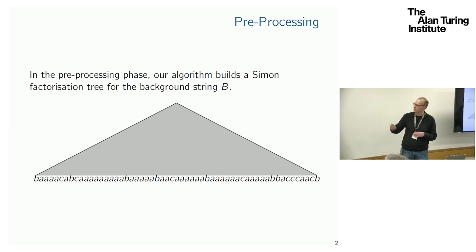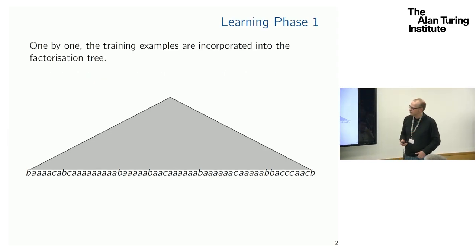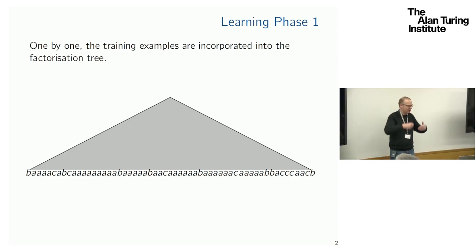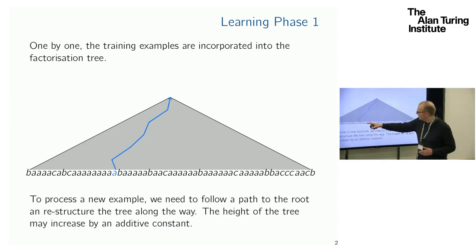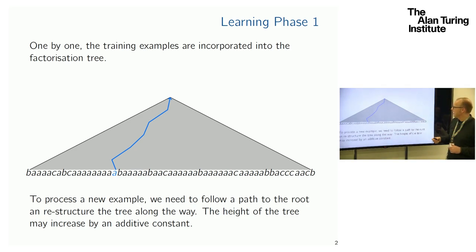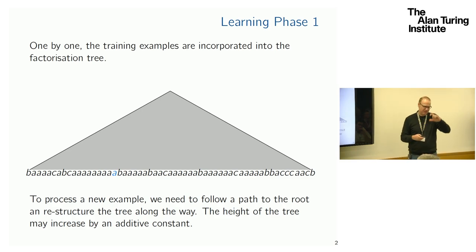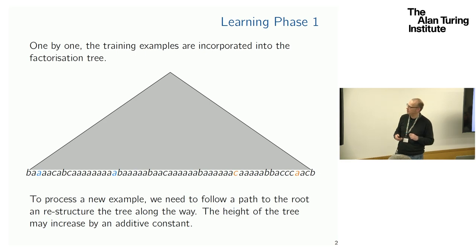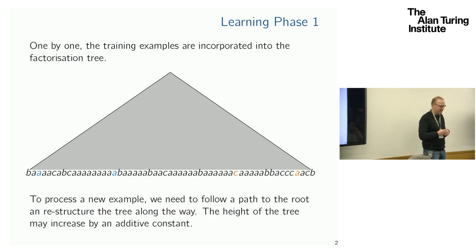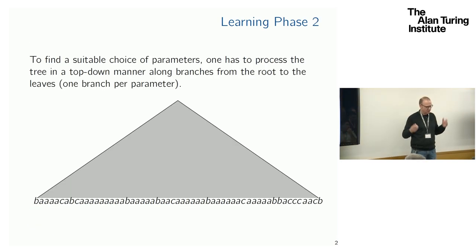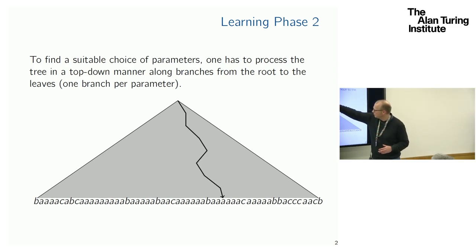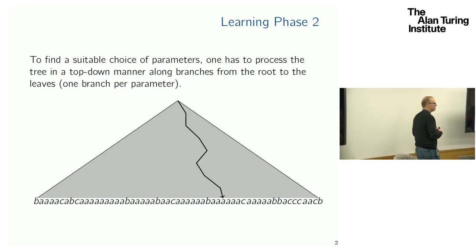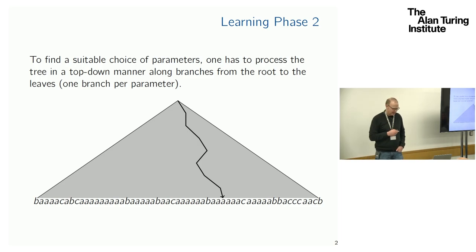The outline in three pictures: pre-processing builds a factorization tree. Then training has two phases. First, we enter training examples one by one and expand the factorization tree — we get a training example, follow a path from that node to the root (constant steps since the height is constant), restructure the tree on the way, and we're done. The tree increases only by an additive constant per example, and after all training examples the height is still polynomial in the number of training examples. Then the last phase is to actually learn the model, which requires going down from the root to the leaves to find the right parameter settings — once for every parameter.